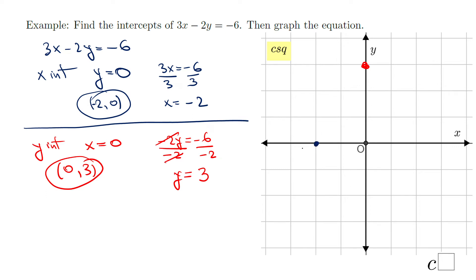Be careful — this is the graph of the given equation 3x - 2y = -6. One more time, be careful and don't make mistakes like I did.